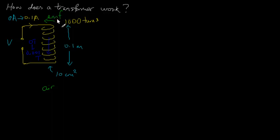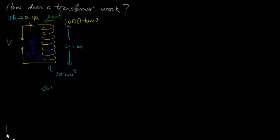So this EMF, as we have seen, must be in the opposite direction to the incoming current. Because it acts in the opposite direction, there is actually a name for this EMF — it is called a back EMF. When a current tries to flow through a coil and is increasing, there will always be a back EMF that opposes it.